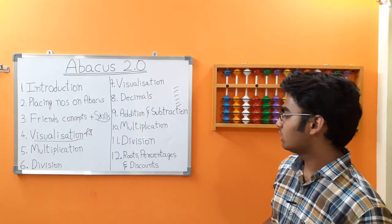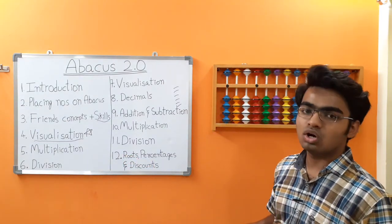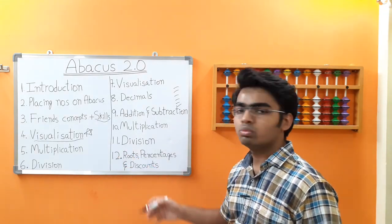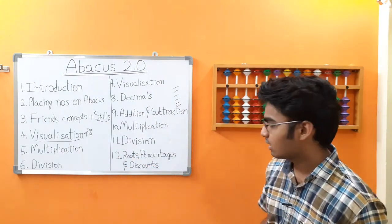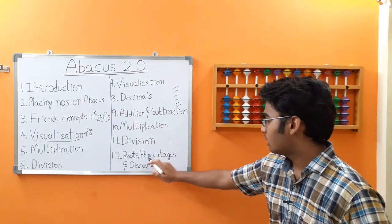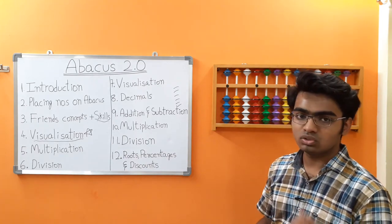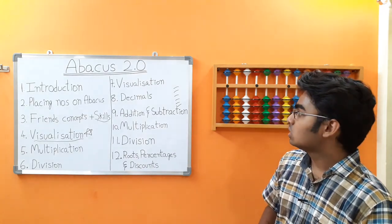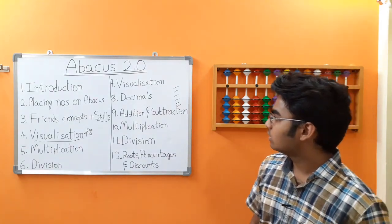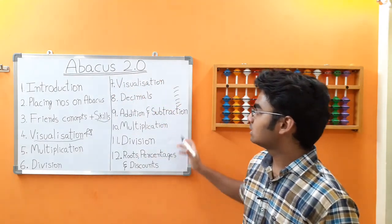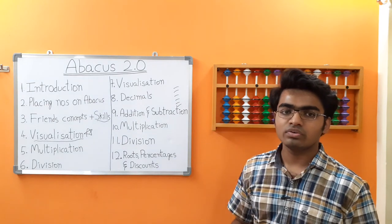Next up, we have an interesting topic that includes computing square roots and cube roots with the help of abacus, as well as how to calculate percentages and discounts. That is the brief explanation of what we are going to cover as part of Abacus 2.0.